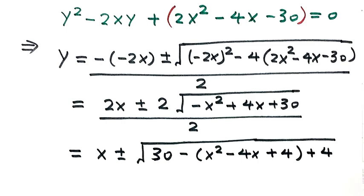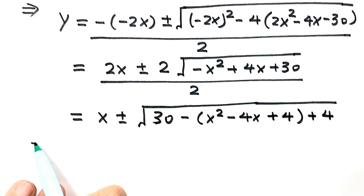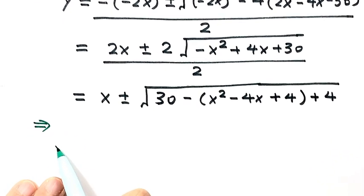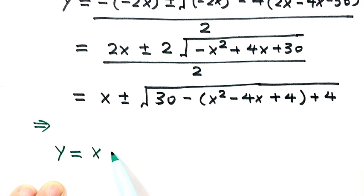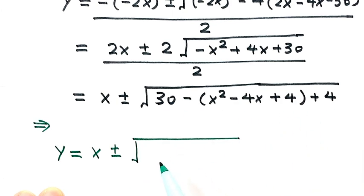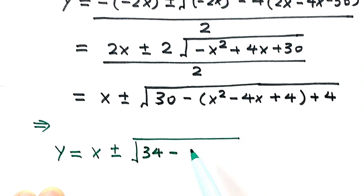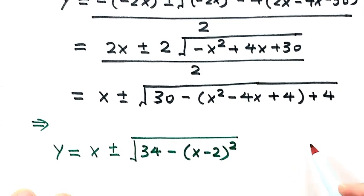We need minus 4, then combined with the negative gives plus 4. So now we have the solution for y. Then y equals x plus or minus the square root of: combining those two gives 34, and the three terms form a complete square which is (x − 2)². So now let's label this as Equation 1.